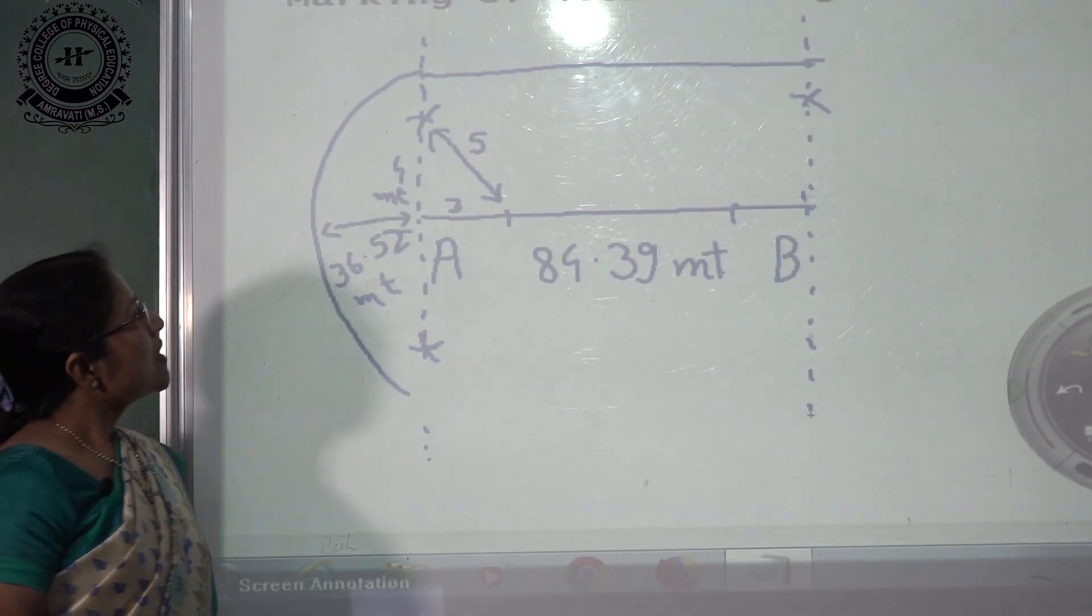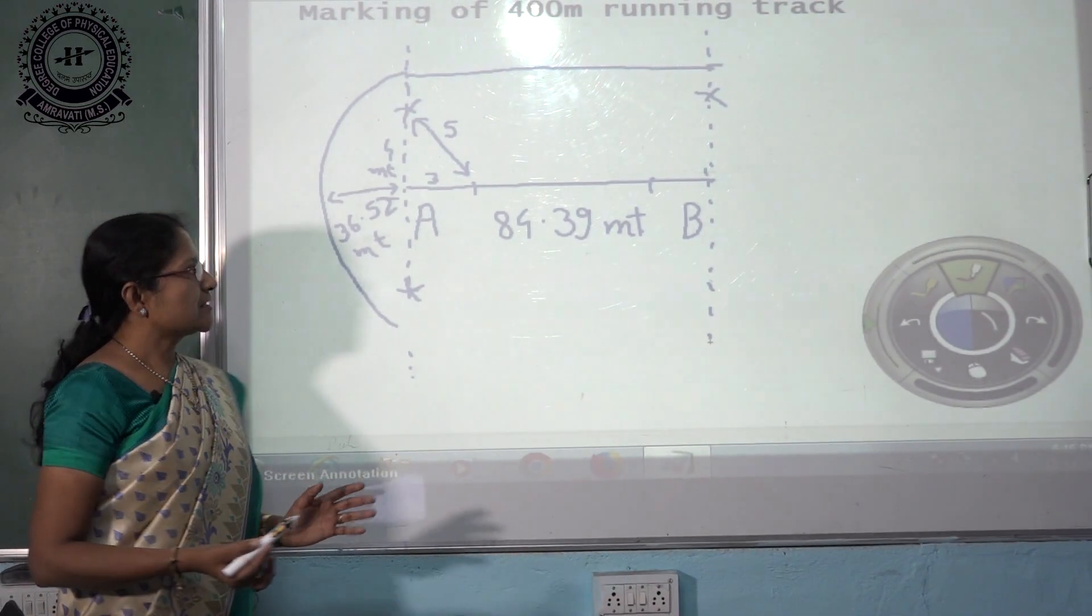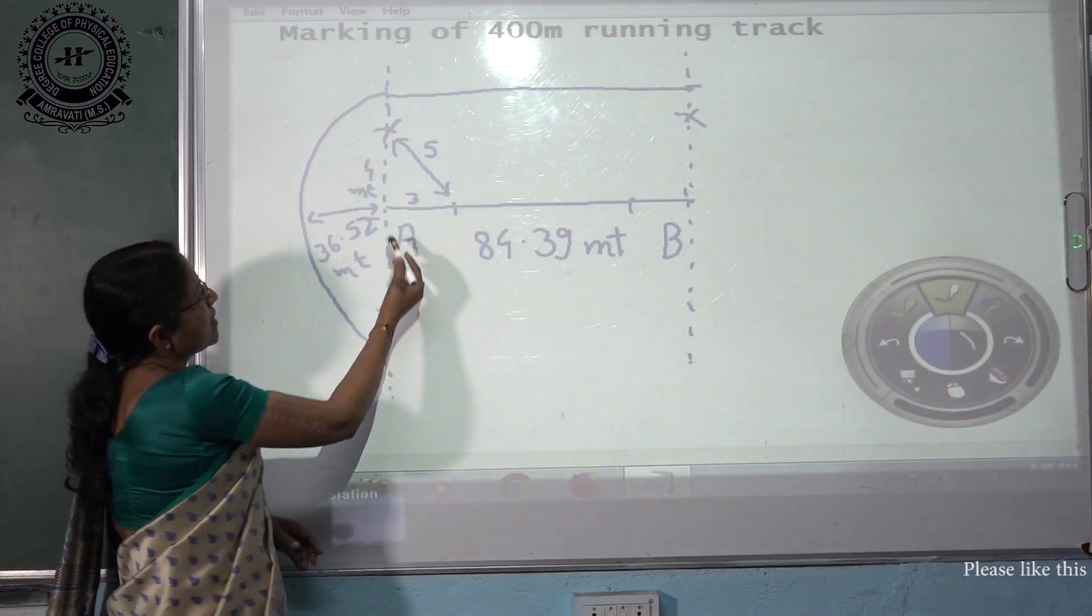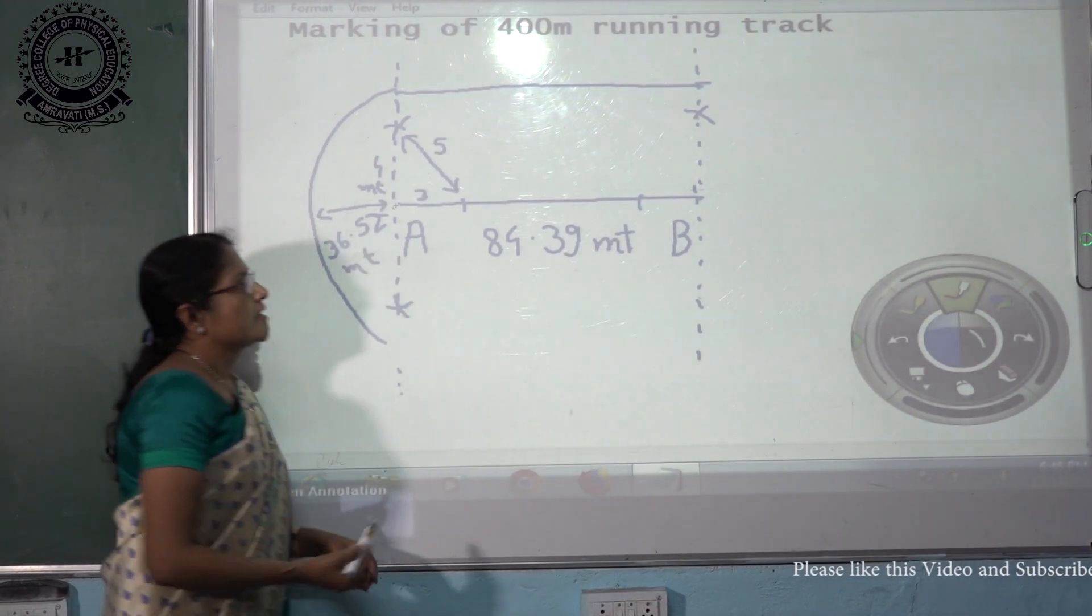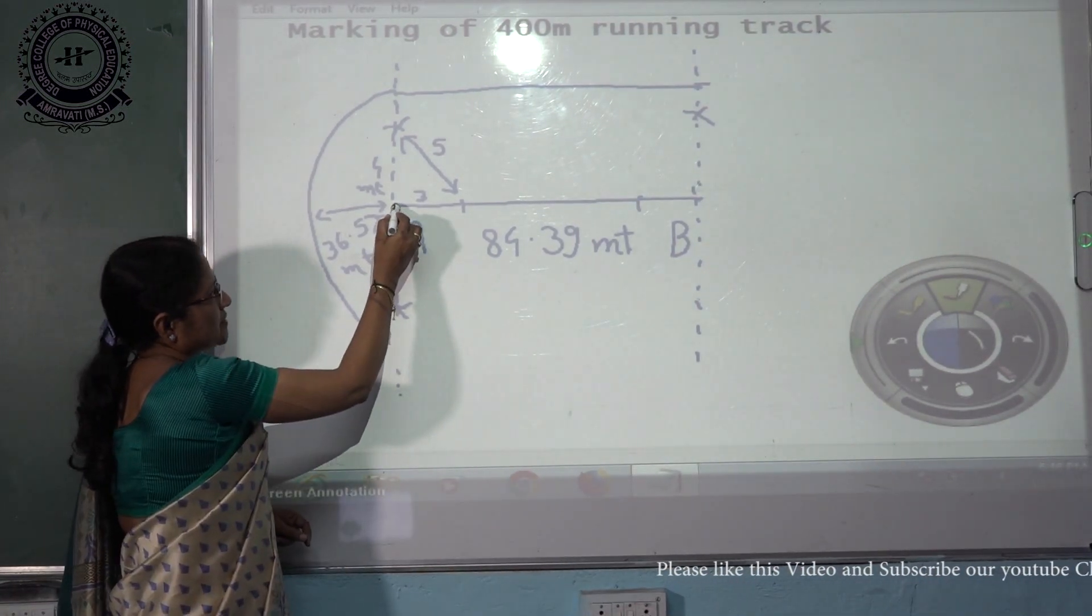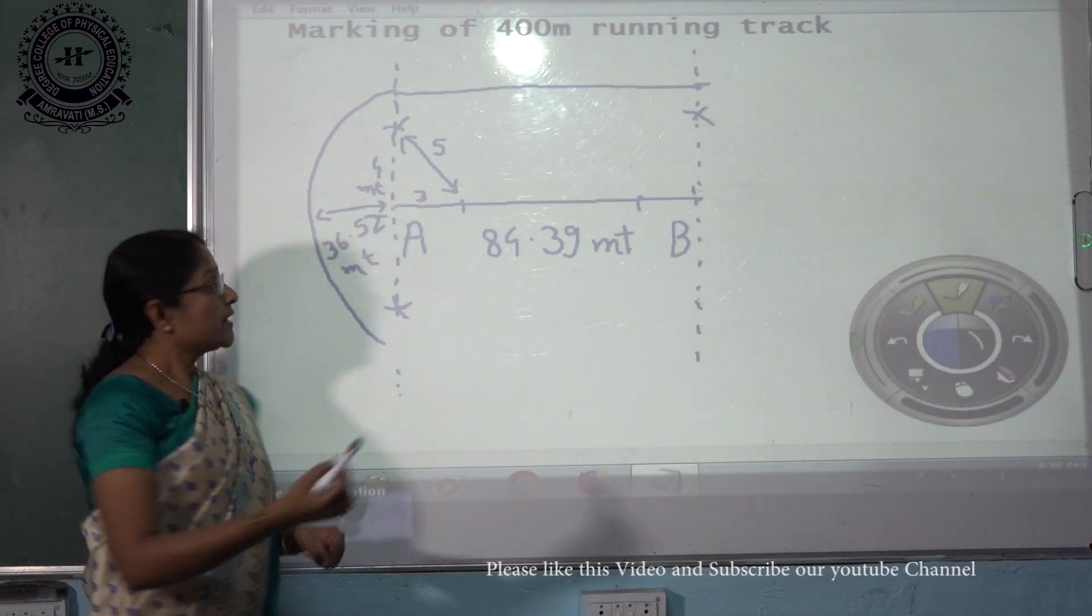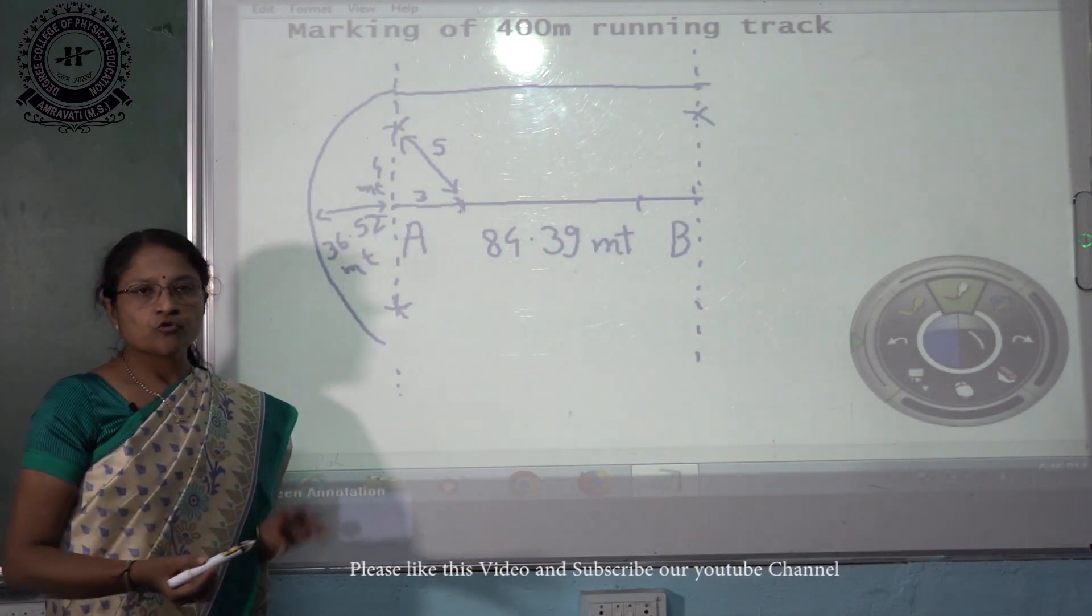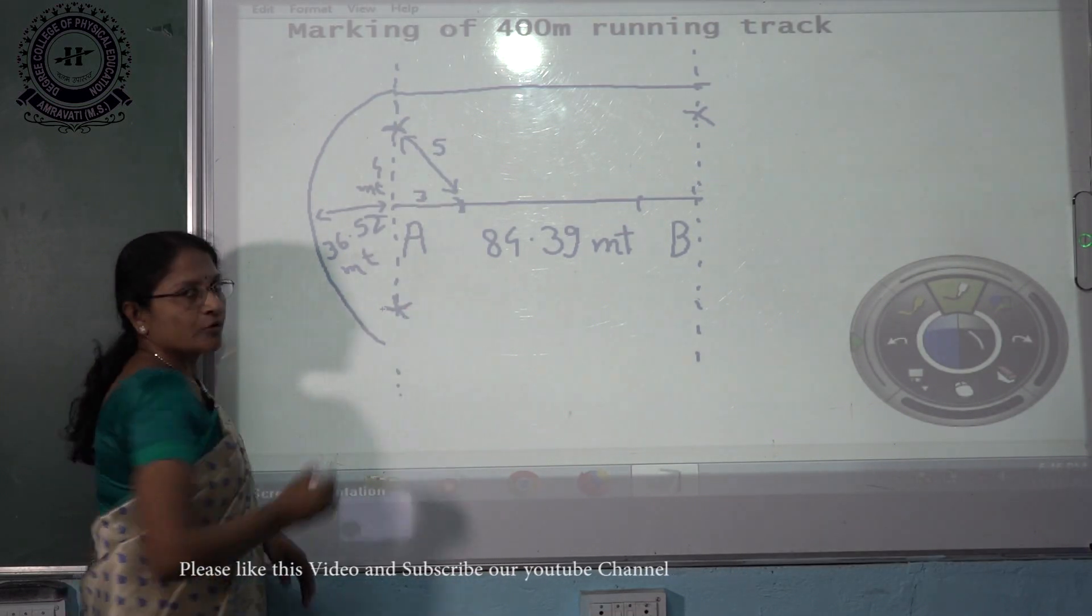Now we have to find first 2 parallel lines. By using Pythagoras theorem, this point of straight is A and another is B. Using Pythagoras theorem, we take this as a center, A as a center, and taking 3 meter distance draw one curve here and 4 meter distance draw one curve here and this side.